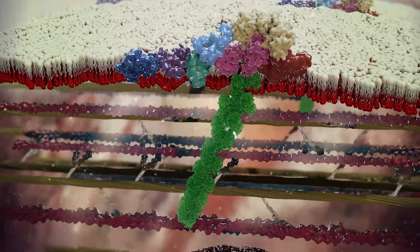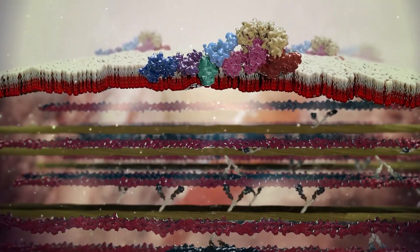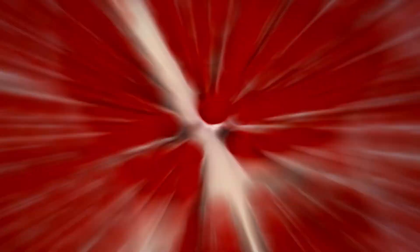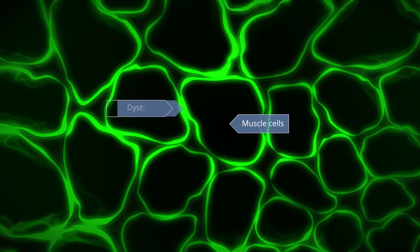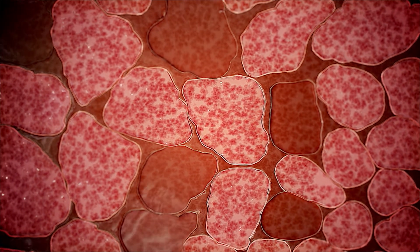Such frameshift mutations result in production of little or no functional dystrophin protein. Lack of dystrophin leads to a cycle of muscle cell degeneration, inflammation, and fibrosis that is characterized by loss of muscle mass and muscle wasting.